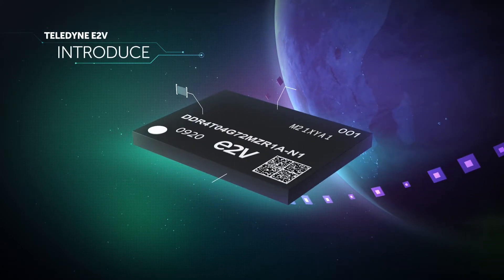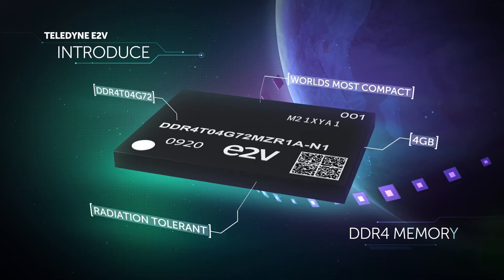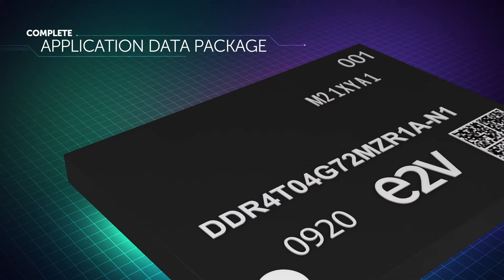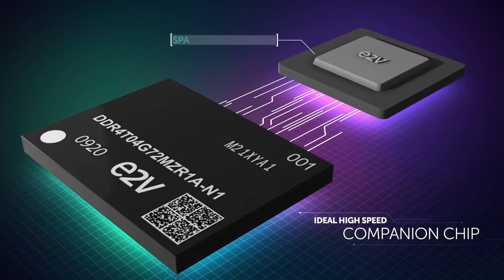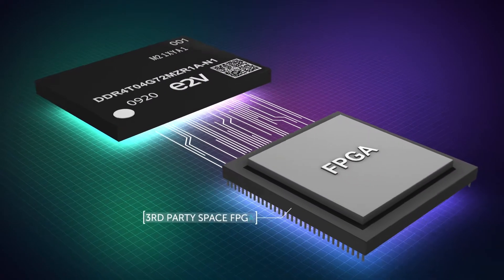Teledyne E2V introduced the world's most compact, radiation-tolerant 4GB DDR4 memory for space systems, a solution with a complete application data package, which is the ideal high-speed companion chip for Teledyne's E2V space-grade processors or third-party space FPGAs.